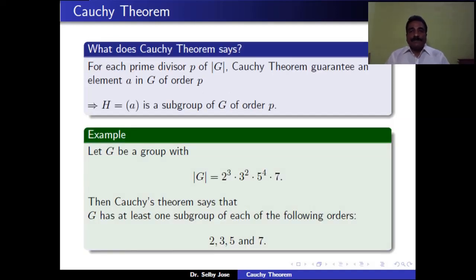The Cauchy theorem says that for each prime P dividing the order of G, there exists an element A in G of order P, and the cyclic group generated by A is a subgroup of G of order P. For example, let G be a group of order 2 · 3² · 5⁴ · 7. Then Cauchy's theorem guarantees G has at least one subgroup of order 2, one of order 3, one of order 5, and one of order 7, since each is a prime dividing |G|.